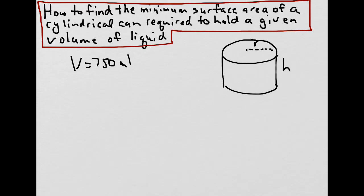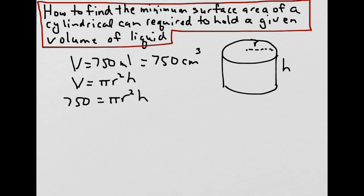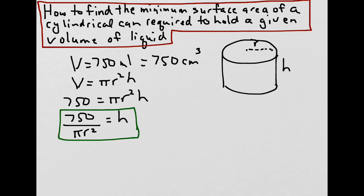We could use geometry, algebra, and calculus to help solve this problem. First, we know that one milliliter is one centimeter cubed, so 750 milliliters is equivalent to 750 centimeters cubed. And we know that the volume of a cylinder is pi r squared h, so we can substitute our value for volume into the equation and get 750 equals pi r squared h. Let's isolate h by dividing both sides by pi r squared, giving us h equals 750 divided by pi r squared. We'll call this equation 1.